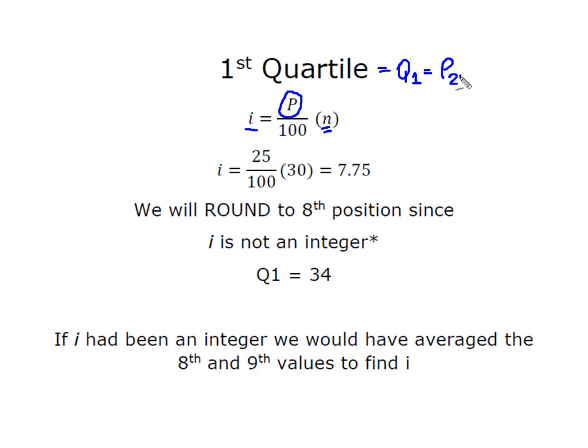So Q1 equals P25. I'm going to substitute into my formula. Looking for the 25th percentile, I have 30 observations. I do that math and I come up with 7.75.